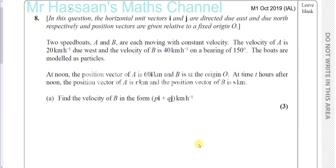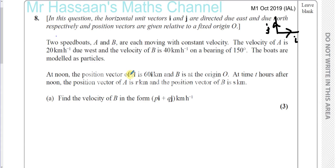Welcome back. I'm going to be doing question number eight from the Mechanics 1 (M1) October 2019 international A-level Edexcel paper. In this question, the horizontal unit vectors i and j are directed due east and due north respectively, so i goes east and j goes north. Two speedboats' position vectors are given relative to a fixed origin O. Two speedboats A and B are each moving with constant velocity. At noon, the position vector of A is 60i kilometers and B is at the origin.